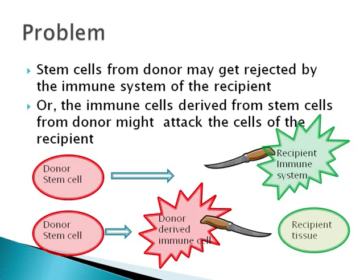The immune system plays spoiled sport in two ways. In the first case, stem cells from a donor may get rejected by the immune system of the patient. Or, the immune cells derived from the donor stem cells might attack the cells of the patient. This is called the graft versus host disease, or GVHD.